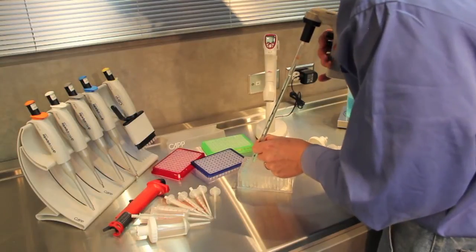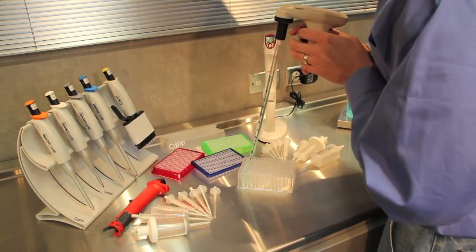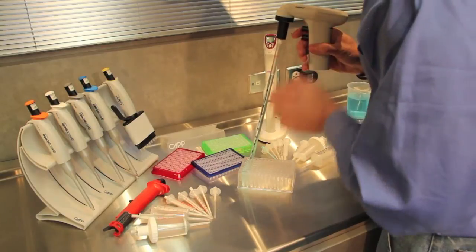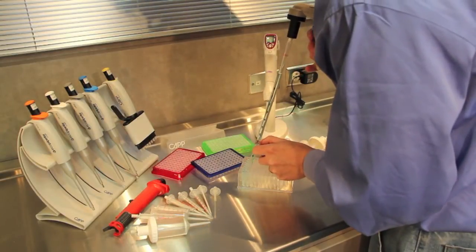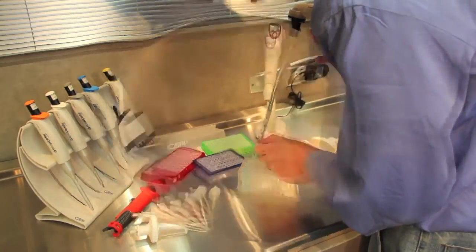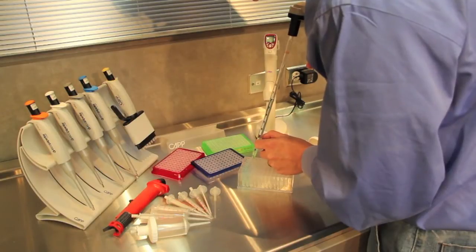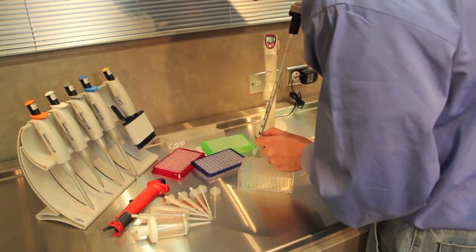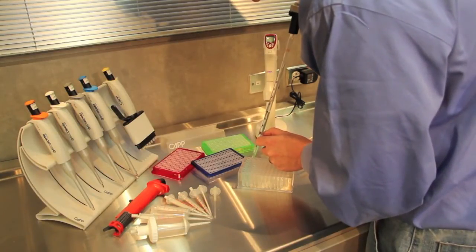You can actually set it up so it pushes the liquid out, or there's a button on the back where you can go to a gravity dispense which gives you a little more control. This would be a good option if you just had to get some media in each one of these wells but you weren't concerned with having exactly 1ml in each one of them.